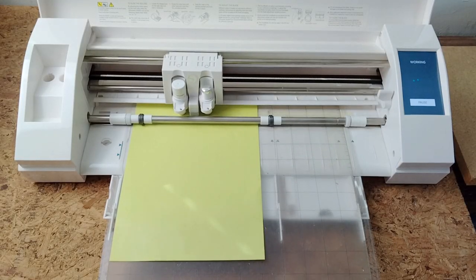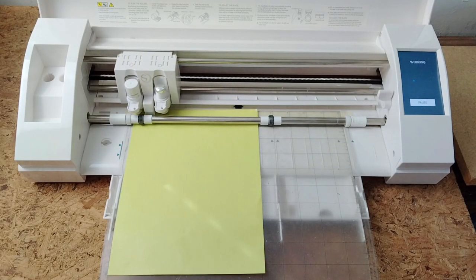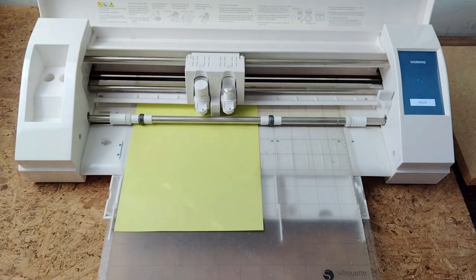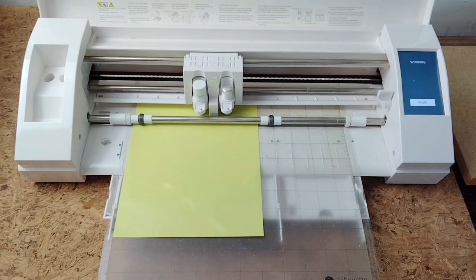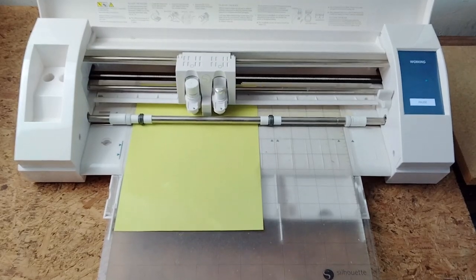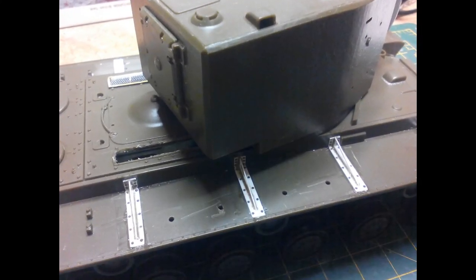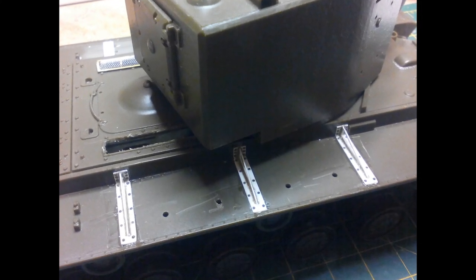The cutter comes to life and begins the process, usually taking just a few minutes to cut the masks for a full Tamiya sheet. One neat feature of the Cameo cutter is that it can cut up to 2mm sheet styrene so you can cut parts as well. I created fender braces for the Tamiya KV2 tank build I did.